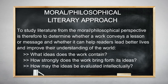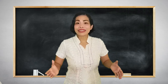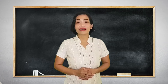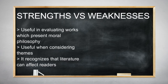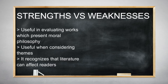What are the strengths and weaknesses of the Moral-Philosophical-Literary Approach? This approach is useful in evaluating works which present an obvious moral philosophy. It is also useful when considering the themes of works — for example, Man's Inhumanity to Man in Mark Twain's Huckleberry Finn. It does not view literature merely as art isolated from all moral implications. It recognizes that literature can affect readers, whether subtly or directly, and that the message of a work, and not just the decorative vehicle for that message, is important.